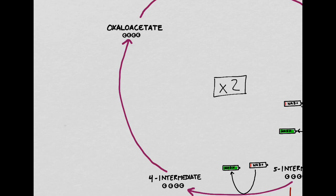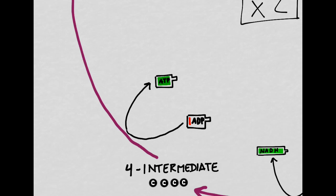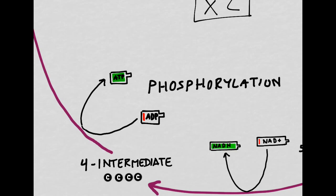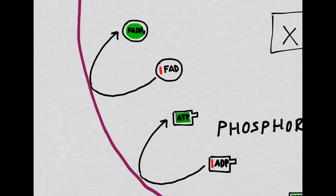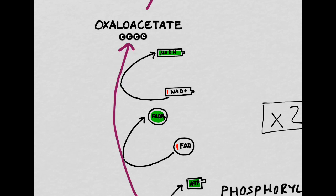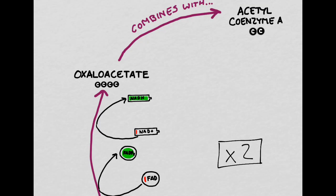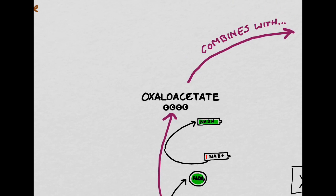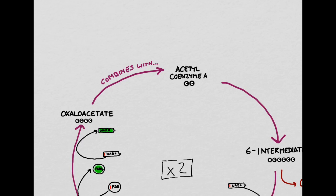In order to convert our four-carbon intermediate into oxaloacetate, we undergo a series of complex reactions that generate three different products. The first reaction results in a molecule of ADP being recharged into ATP — the scientific term for this is phosphorylation. The next reaction is the recharging of FAD into FADH2. Finally, we also create one more molecule of NADH from NAD+. After all three of those reactions, we now have a new molecule of oxaloacetate, which can combine with acetyl-CoA and restart the cycle.